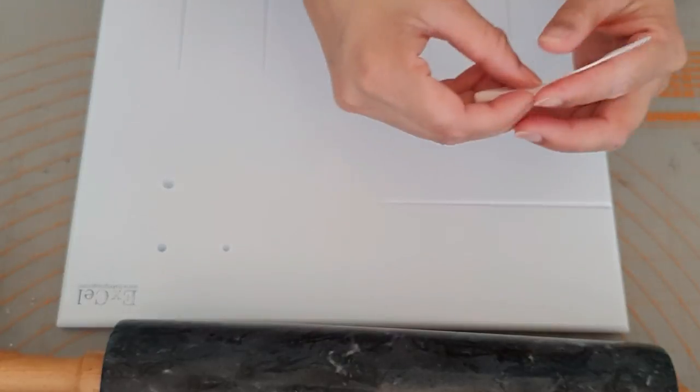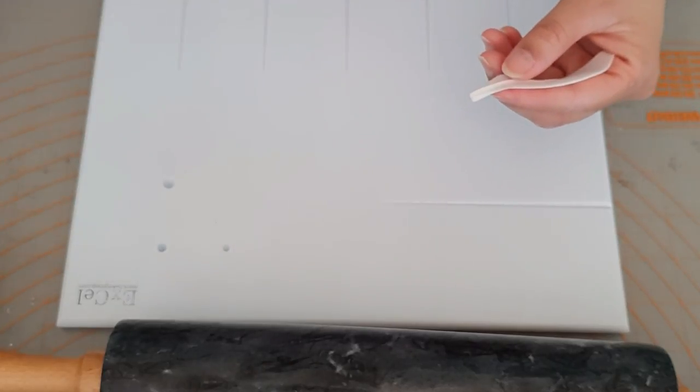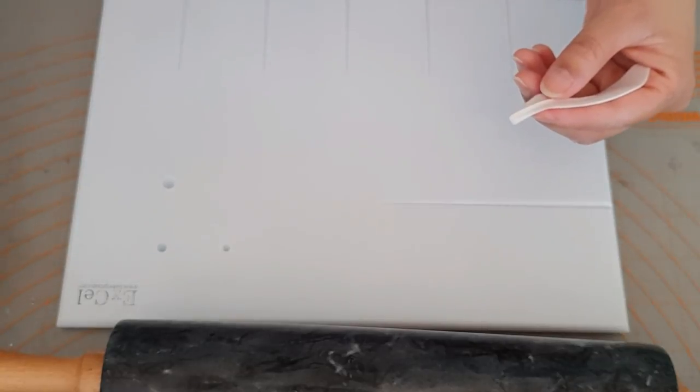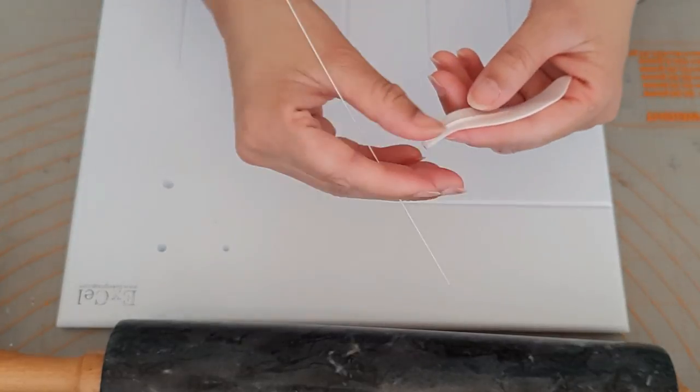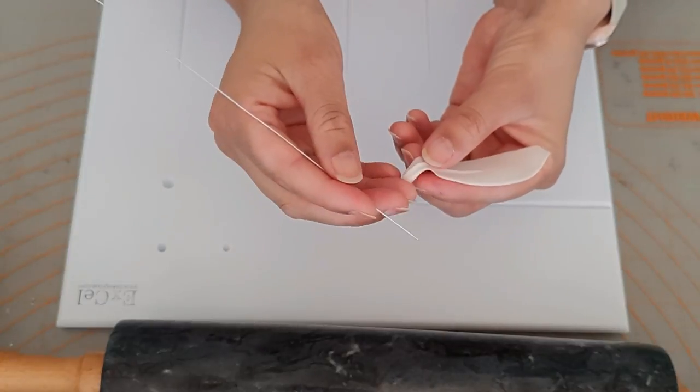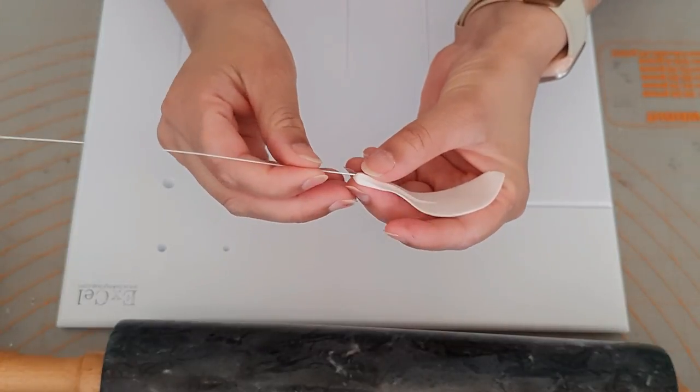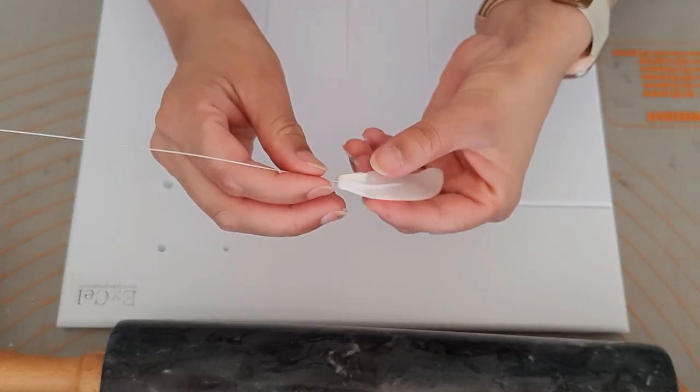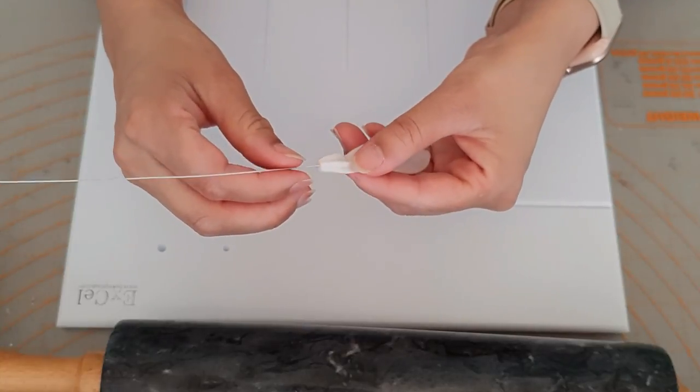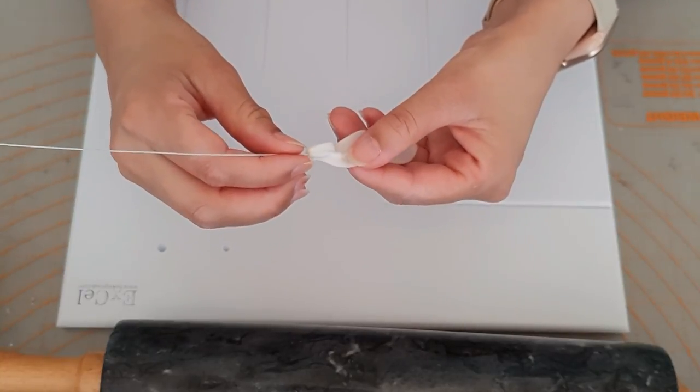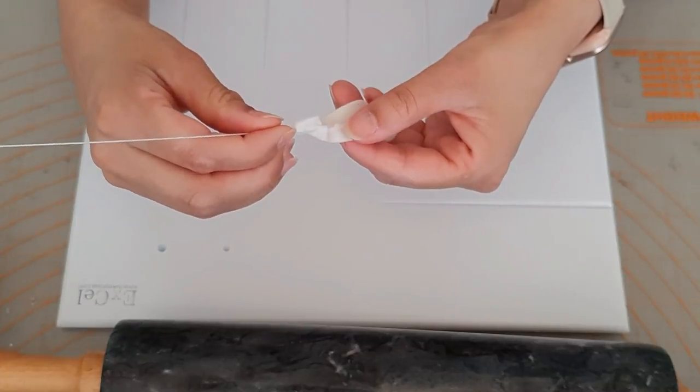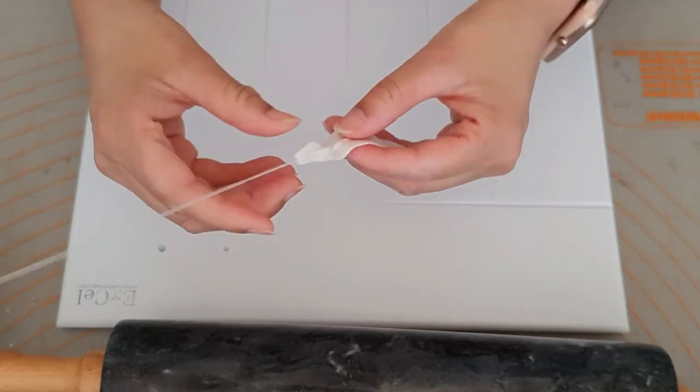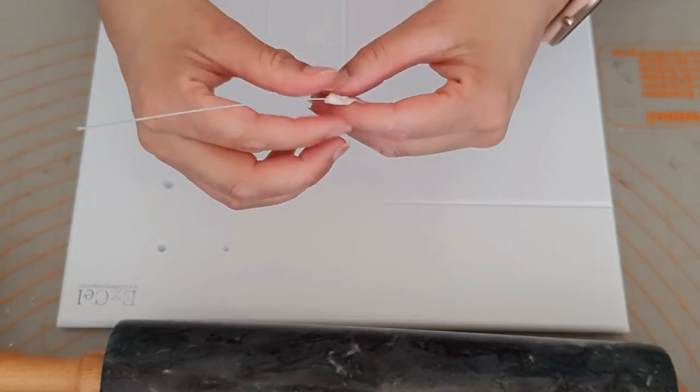So once you've cut out all six, all we're going to do is get our sugar glue and get our petal. And we're just going to dip our wires in the sugar glue and just poke it through. Just like so.